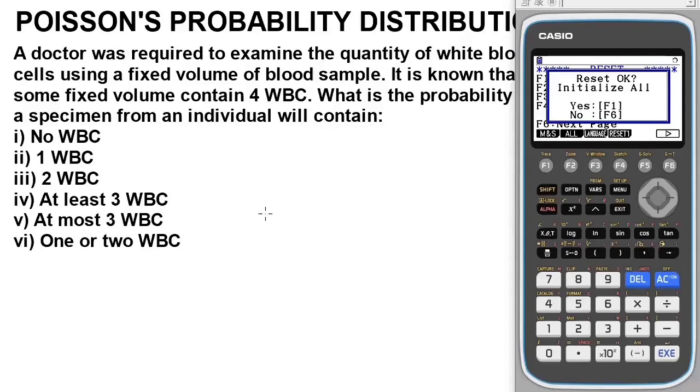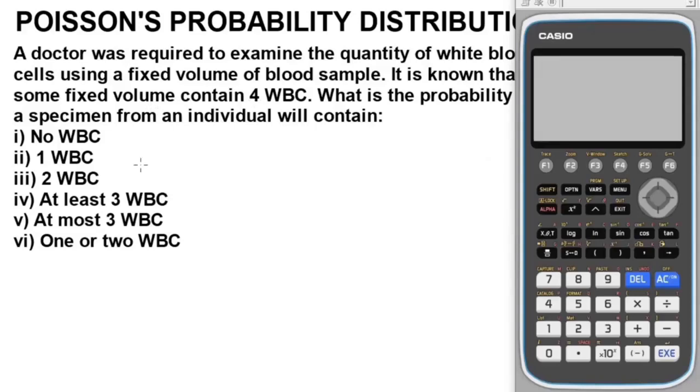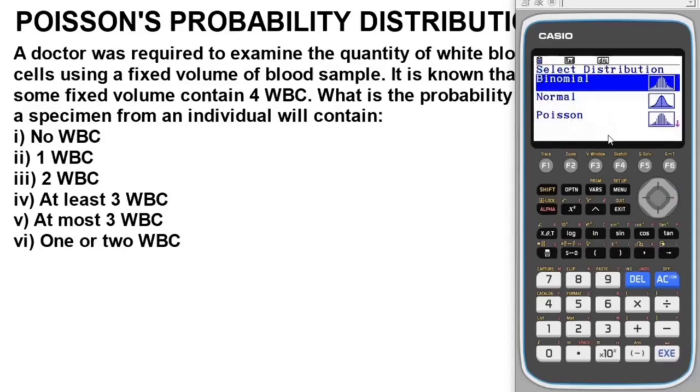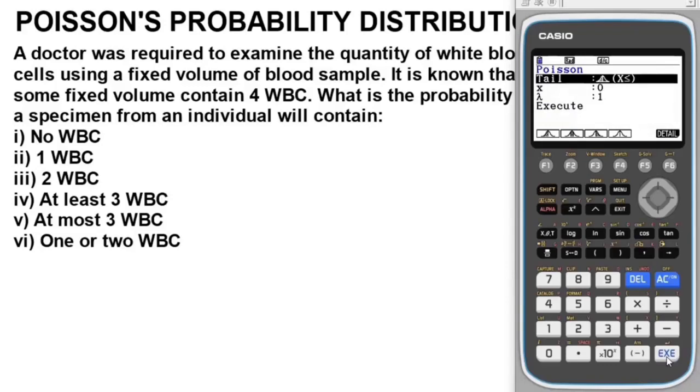We're going to put it in distribution mode. To get distribution, use this navigation button. When you get here you see Poisson option 3. Go to Poisson and press OK.